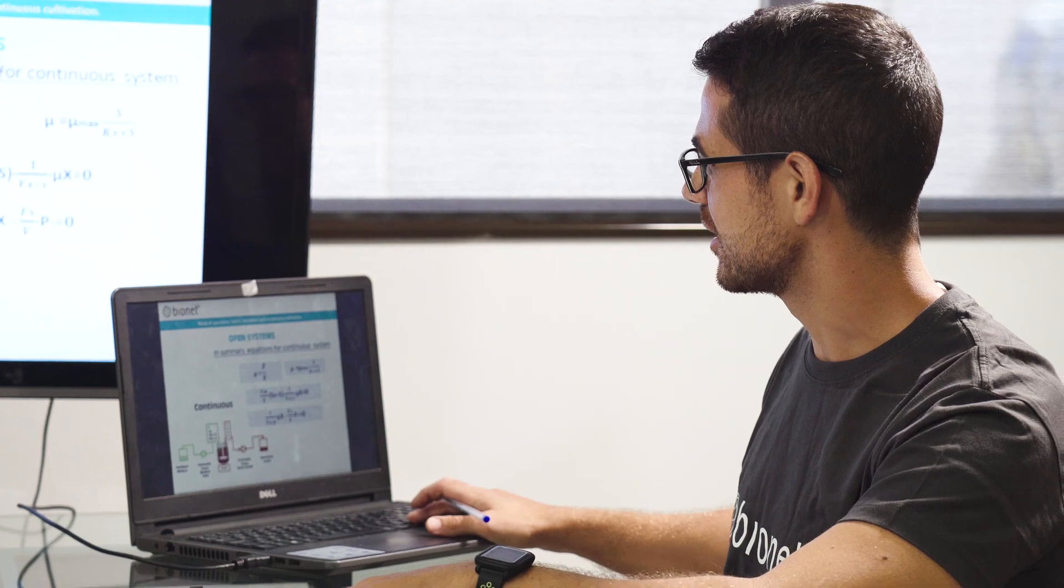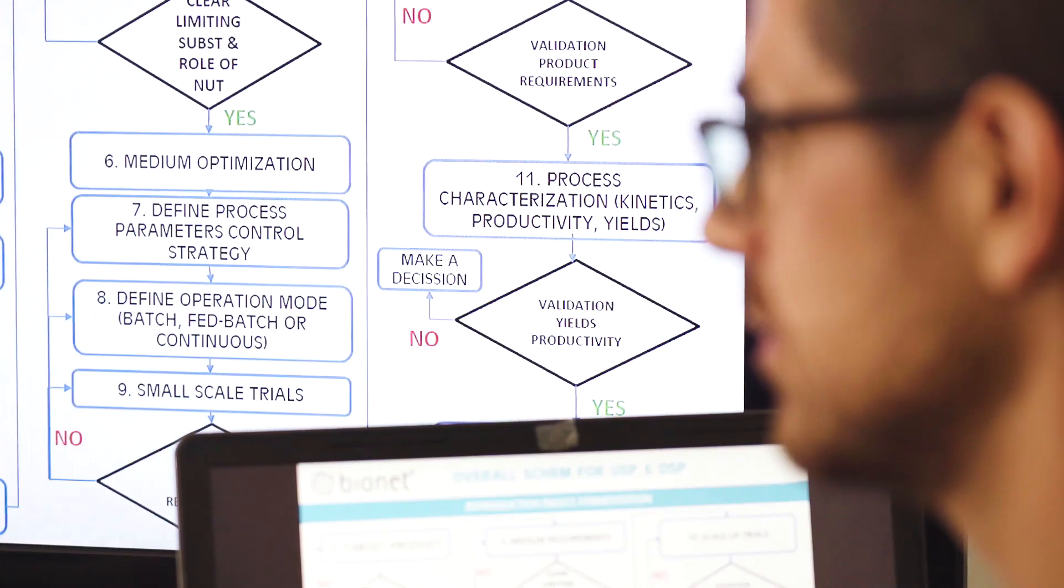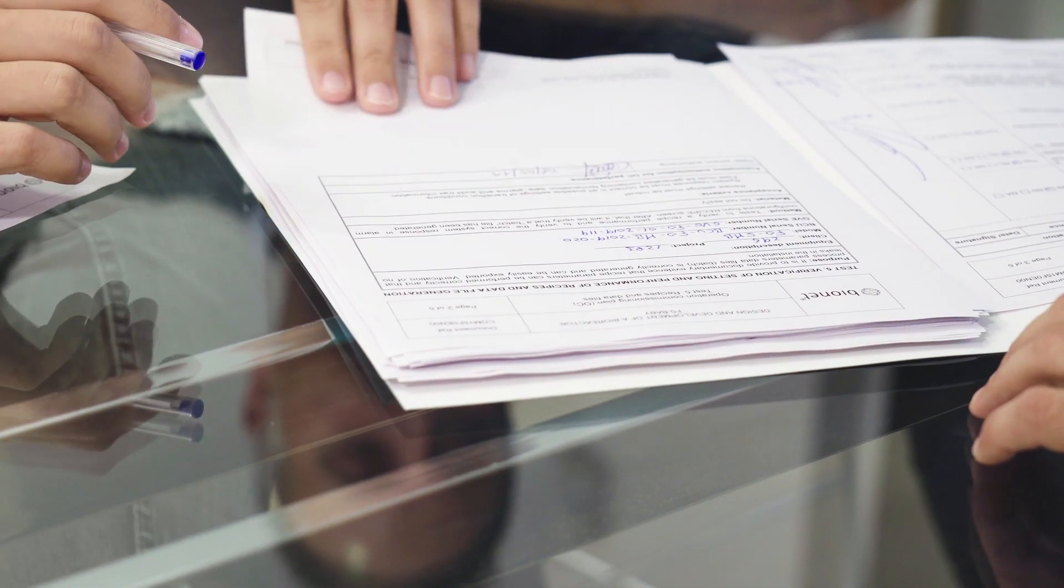So far, the application of continuous processing has been limited due to the high level of deep knowledge and prior characterization of the process that are both required. At Bionet, we are working to provide the process solutions and knowledge services for overcoming these limitations and introduce continuous processing smoothly in your research or industrial operation.